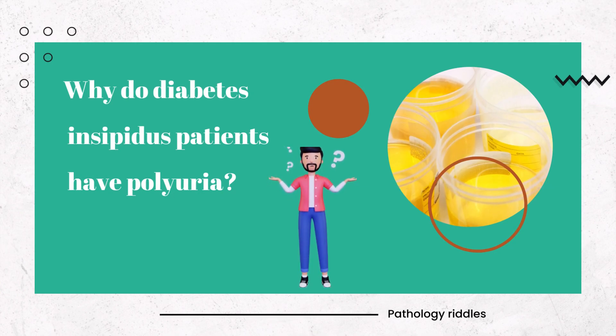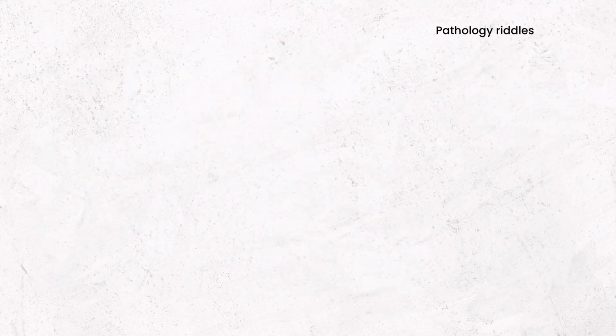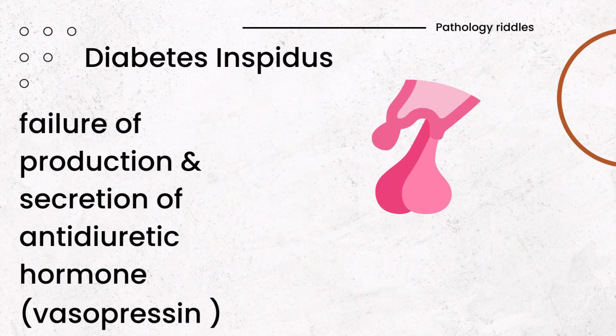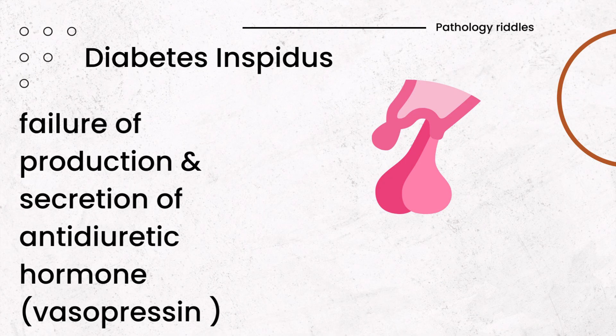Why do diabetes insipidus patients have polyuria? In diabetes insipidus, there is a failure of production and secretion of anti-diuretic hormone, also called vasopressin. This hormone is important for reabsorption of water. Hence, the water cannot be properly reabsorbed, which causes polyuria.